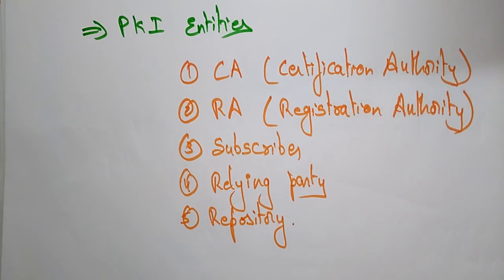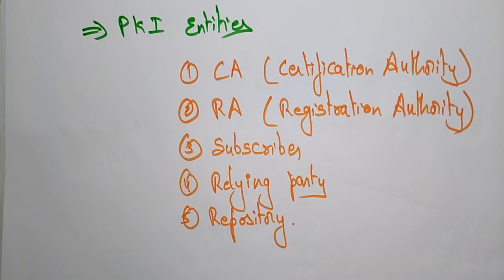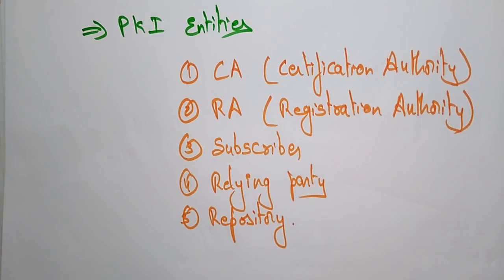The name itself says 'public key infrastructure.' If you want to make data visible to the public, you need to follow some entities, instructions, and certifications. If certifications are present, the public can believe the data on the internet. If users want to believe some important information shown over the internet, they need certifications.